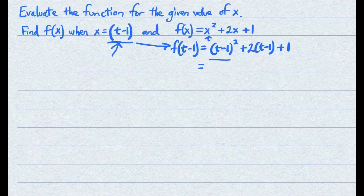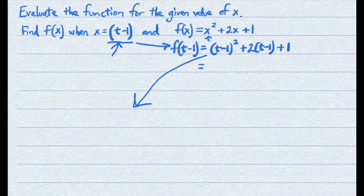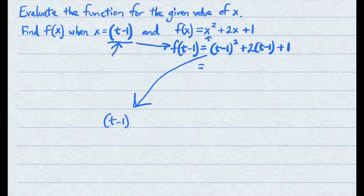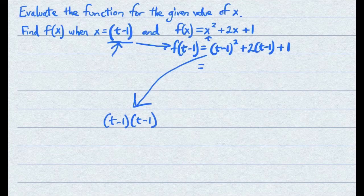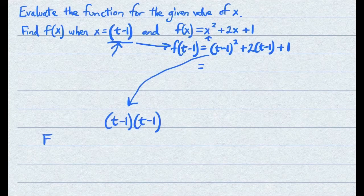We have to FOIL this part here in the parentheses, so that can be done separately down here. t minus 1 times t minus 1. Your first term is going to be t times t. Your outside term is going to be t times negative 1.